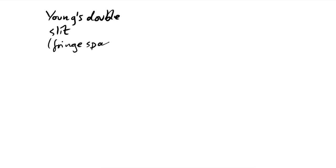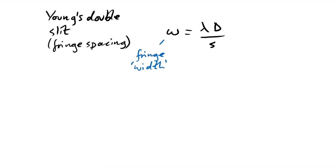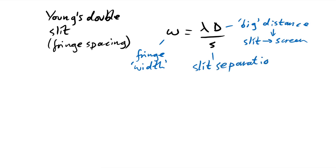Young's double slit fringe spacing equation is w = λD/s, where w is fringe width, λ is wavelength, D is the large slit-to-screen distance, and s is the small slit separation. All quantities are in metres. The diffraction grating equation is d sinθ = nλ, where d is the grating spacing, θ is the angle of the order, n is the order number (0, 1, 2, 3...), and λ is wavelength.